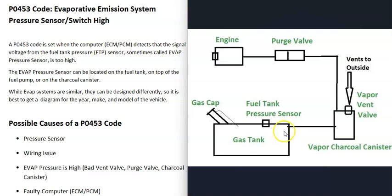The basics are: gas vapors leave the gas tank and go to what's called a charcoal canister, which is storage for the gas vapors. Located on or near the charcoal canister is a vent valve — the computer can open or close it to test the system. A hose leaves the charcoal canister and goes up to the engine compartment to what's called a purge valve. The purge valve stays closed when the engine is off, and when the engine is running, the computer signals it to open so gas vapors go to the engine to get burnt off.